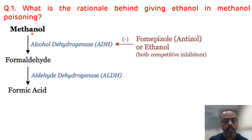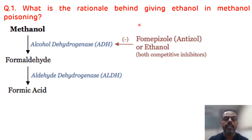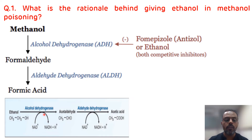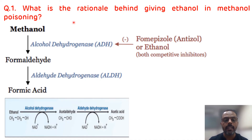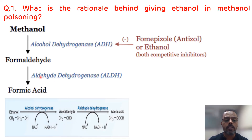Ethanol is structurally similar to methanol and acts as a competitive inhibitor of methanol. In the presence of ethanol, the alcohol dehydrogenase enzyme preferentially binds to ethanol. Instead of methanol being converted to formaldehyde, ethanol is converted to acetaldehyde via alcohol dehydrogenase enzyme, and acetaldehyde is not toxic compared to formaldehyde. This acetaldehyde is then converted to acetic acid via aldehyde dehydrogenase enzyme and excreted in the urine. That is why ethanol is used as an antidote in methanol poisoning.